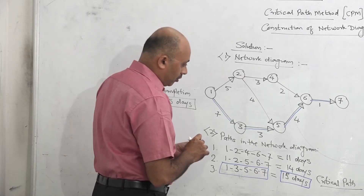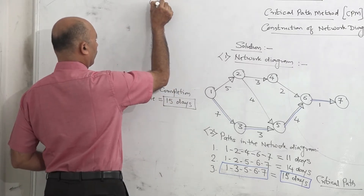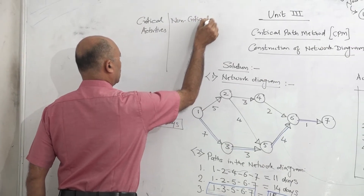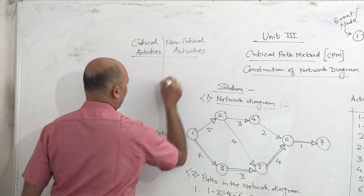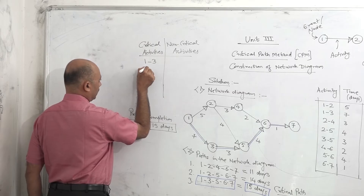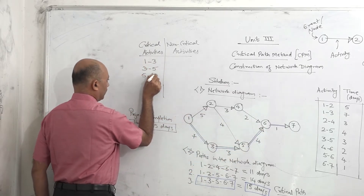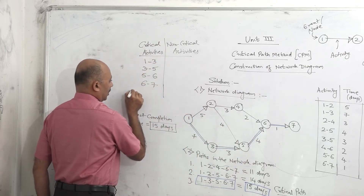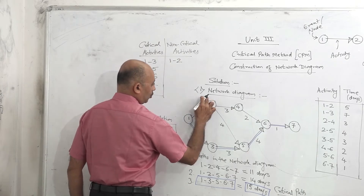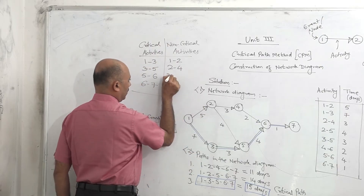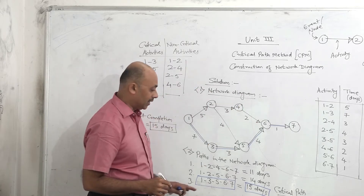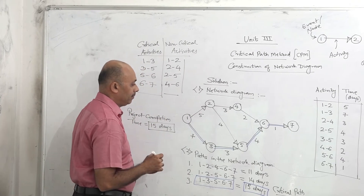Another concept you should understand is critical activities and non-critical activities. The critical activities are those activities which are on the critical path. For this example: activity 1-3 is critical, 3-5 is a critical activity, 5-6 is a critical activity, and 6-7 is a critical activity. All other activities not on the critical path are called non-critical activities: 1-2, 2-4, 2-5, and 4-6 are non-critical. This is how we construct the network diagram based on node relationship.